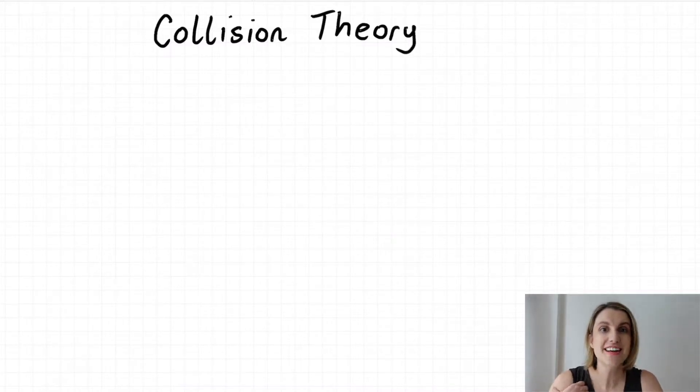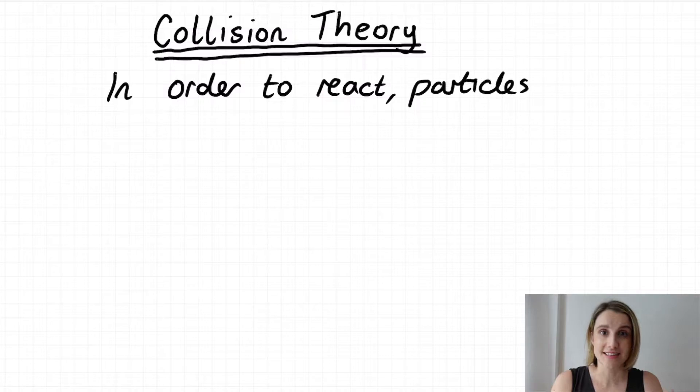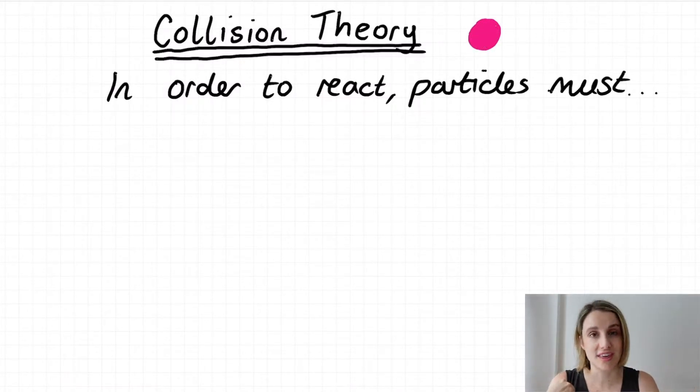Collision theory is all about what we need to do to make particles react successfully. I'm defining a successful reaction by saying that when the two reactants combine together to make the products. So in this case, in any reaction, the particles must do certain things in order to react successfully.